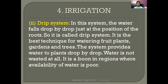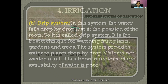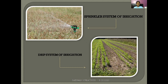The second modern method is the drip system. In this system, water falls drop by drop just at the position of the roots, which is why it is called the drip system. It is the best technique for watering fruit plants, gardens, and trees. Water is not wasted at all, making it very useful in regions where availability of water is poor. In the first picture, water flows under pressure through a rotating nozzle like a sprinkler. In the second picture, pipes go between plants providing water directly at the roots — this is the drip system.